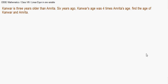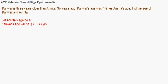Since Conver's age is expressed in terms of Amrita's, we let Amrita's present age be x years. Conver is 3 years older than Amrita, so Conver's present age is x plus 3 years.